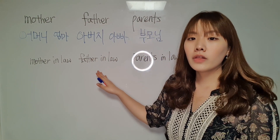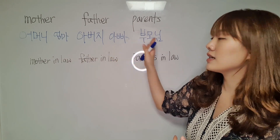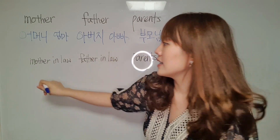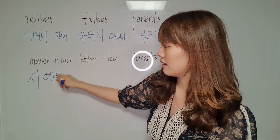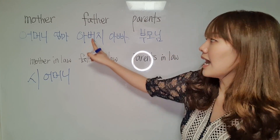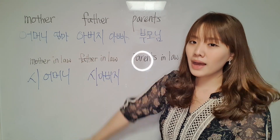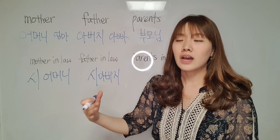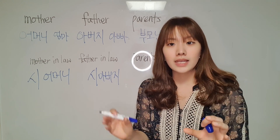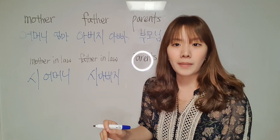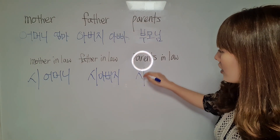And for mother-in-law, father-in-law, and parents-in-law, we put one word in front of 어머니, 아버지, 부모님 — we put 시. So mother-in-law is 시어머니, father-in-law is 시아버지. Note: we don't say 시엄마; we use the respectful forms 어머니 and 아버지. So: 시어머니, 시아버지, and 시부모님.